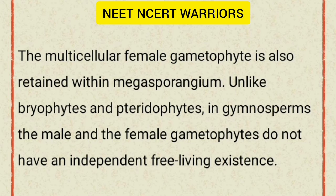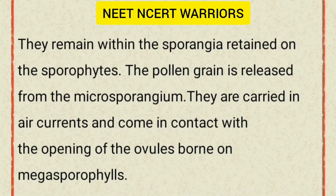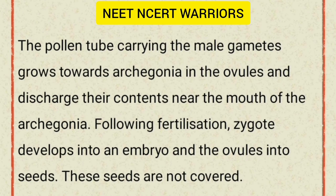Unlike bryophytes and pteridophytes, in gymnosperms the male and the female gametophytes do not have an independent free-living existence. They remain within the sporangia retained on the sporophytes. The pollen grain is released from the microsporangium, carried in air currents, and comes in contact with the opening of the ovules borne on megasporophylls. The pollen tube carrying the male gametes grows towards the archegonia in the ovules and discharges its contents near the mouth of the archegonia. Following fertilization, the zygote develops into an embryo and the ovules develop into seeds. These seeds are not covered.